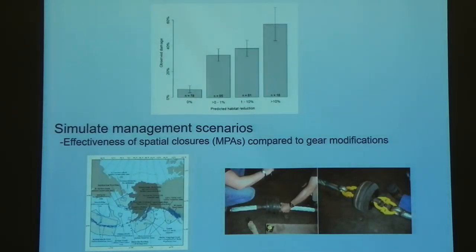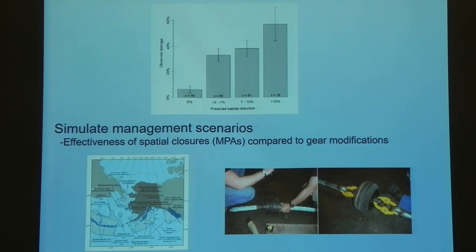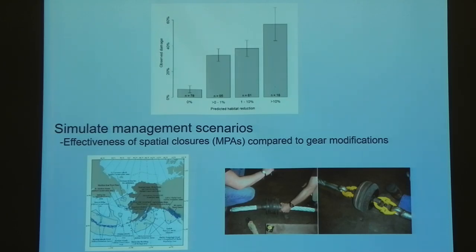We're going to continue working on this model and try to improve it. One of the first things is to make sure it aligns with anything happening in the real world. We're piggybacking on some work to look at the distribution of corals, sea whips, and sponges — cameras were deployed out of the Bering Sea to look at where they are and if there's evidence of broken ones from fishing activity. The x-axis shows groupings of our predicted disturbance to habitat, and on the y-axis is evidence of actual disturbance to these features. There is some agreement that where we predict more disturbance, there is more observed disturbance.